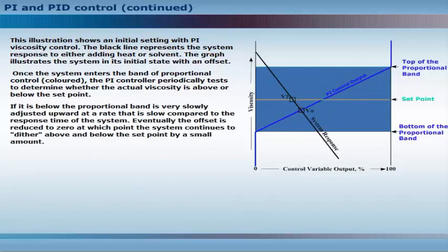If it is below, the proportional band is very slowly adjusted upward at a rate that is slow compared to the response time of the system. Eventually the offset is reduced to zero, at which point the system continues to dither above and below the set point by a small amount.